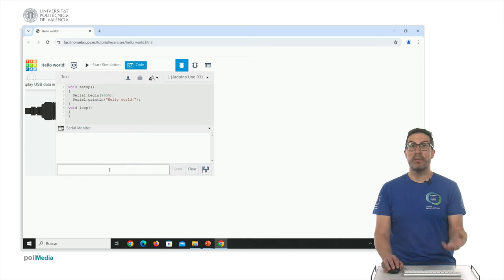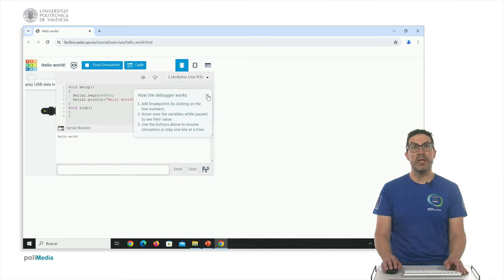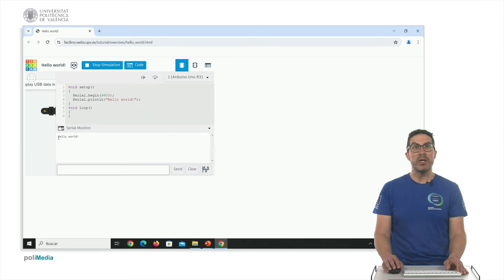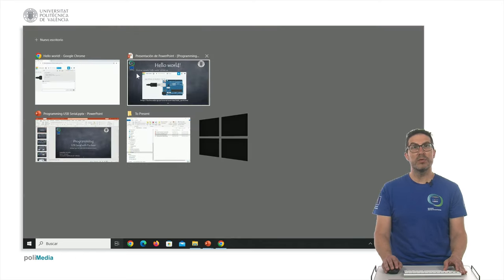Any data we want to send to the microcontroller, we can type here something and then press send. Let me just simply click the start button, so we start the simulation. And as you can see, we have displayed the Hello World sentence as expected.